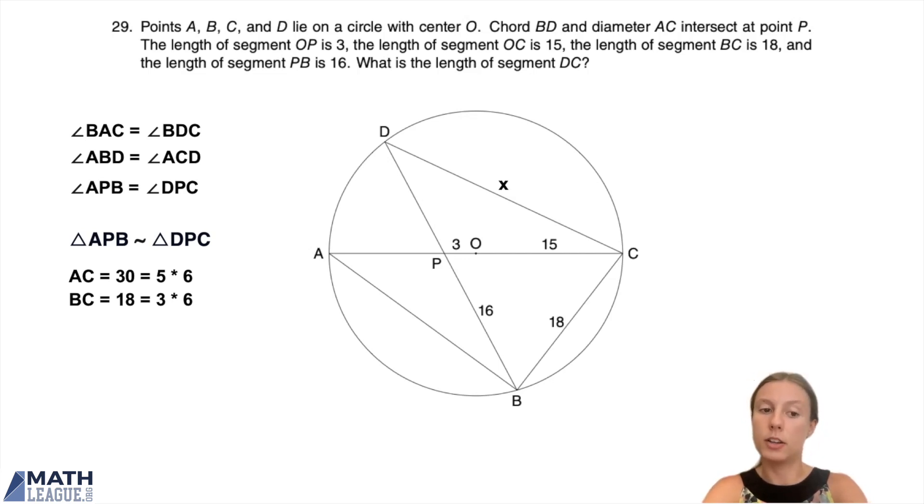So it looks like this is a 3, 4, 5 right triangle scaled up by 6. We've got the 3 side and the 5 side, we need the 4 side. So AB is going to be 4 times 6, which is 24.